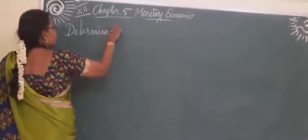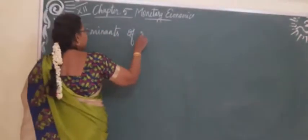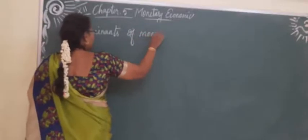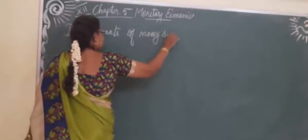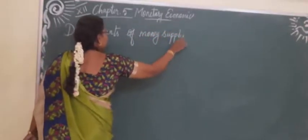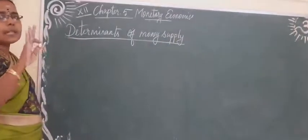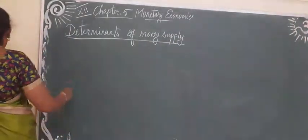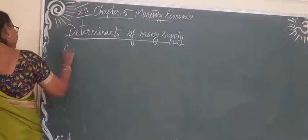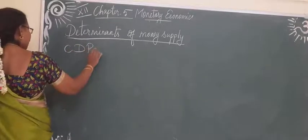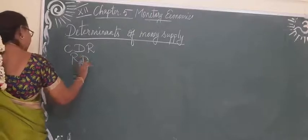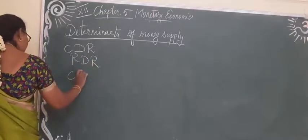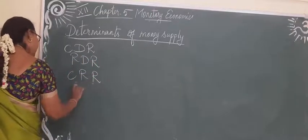Next we are going to see the determinants of money supply. This is an important question that is often asked. Four things determine the money supply in an economy: CDR (Currency Deposit Ratio), RDR (Reserve Deposit Ratio), CRR (Cash Reserve Ratio), and SLR (Statutory Liquidity Ratio).